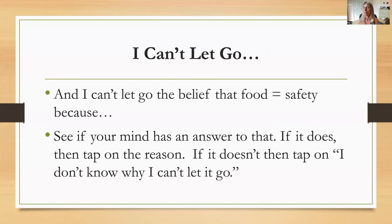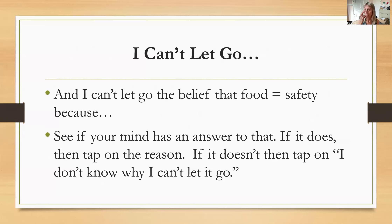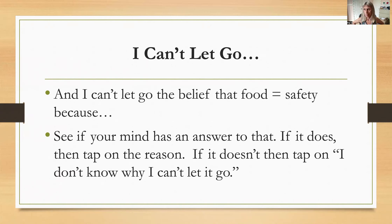Next: 'I can't let go of the belief that food makes me feel better about myself because...' — and see if your mind has an answer. My mind just came up with: it worked before. It certainly made me feel good about myself in the past. So just tap on that — it worked, it did work, I did feel better about myself when I overate certain things. Tapping all those points, thinking about 'I can't let go of the belief that food makes me feel better about myself — because it did, it really did, it really made me feel better about myself.' Food makes me feel better about myself. If you can't think of a reason, just tap on 'I don't know why I can't let go of that belief.'